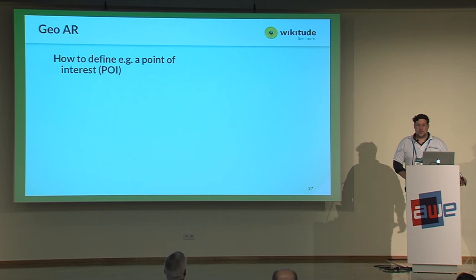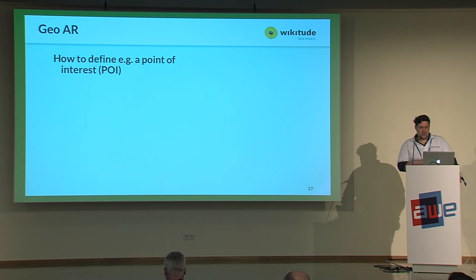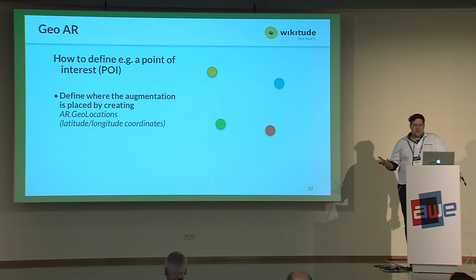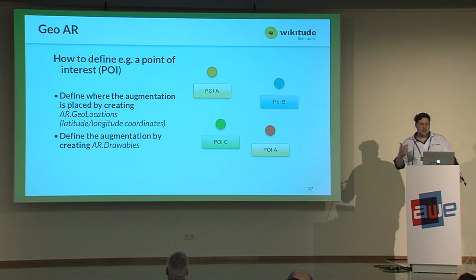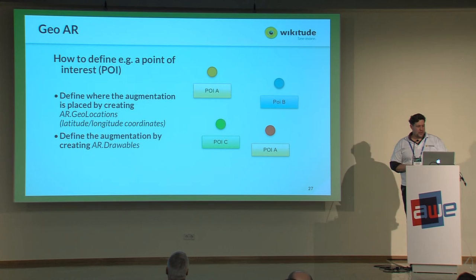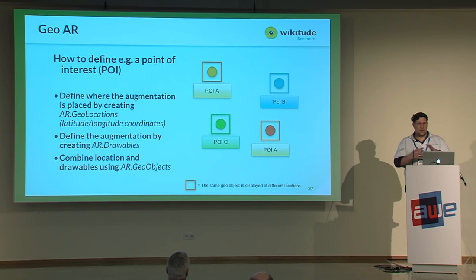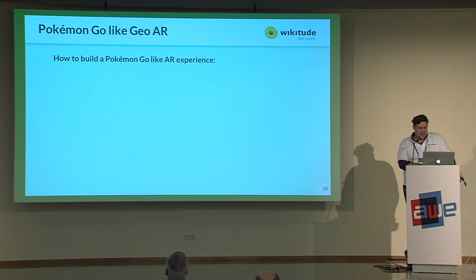One of the oldest and most stable parts of the SDK is how you define and work with points of interest — which is also what a Pokemon Go style app does. Points of interest are defined by two things: where the point of interest is, and what you want to visualize. In the Wikitude SDK API, those are geolocations and drawables put together through geo-objects. You can reuse drawables, which is why there's a separate element to combine them.